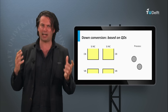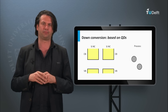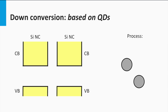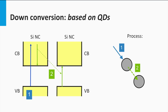Here we see the electronic bandgap diagram of two nanoparticles placed at a very close distance from each other, in the order of a nanometer. In one particle, an electron is excited into the conduction band. In such nanoparticle systems, the quantized rest energy is not necessarily lost as heat to the lattice, but can be transferred as a quantized energy package to a neighboring quantum dot, where a second electron is excited into the conduction band of the second quantum dot. Now we have generated two electron-hole pairs out of one photon.